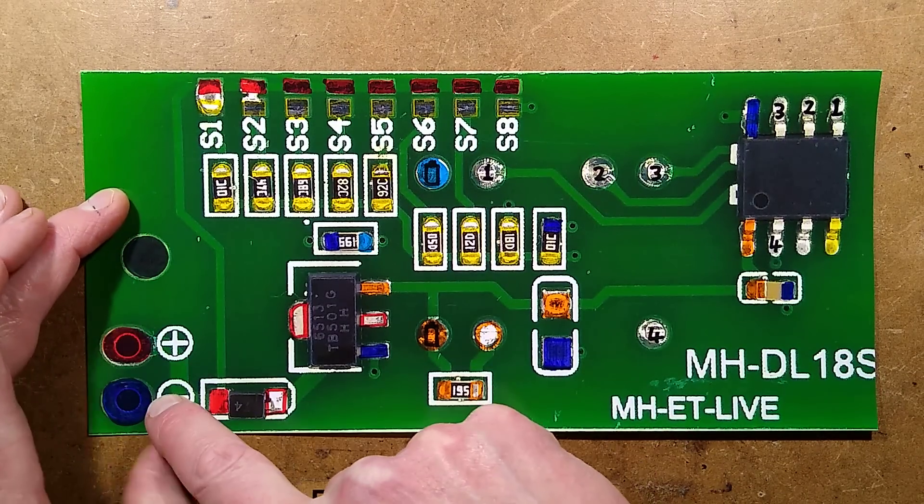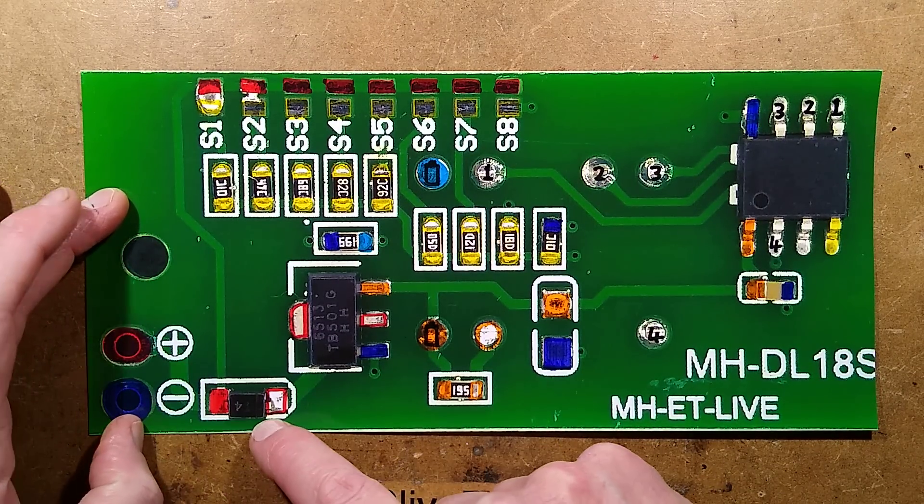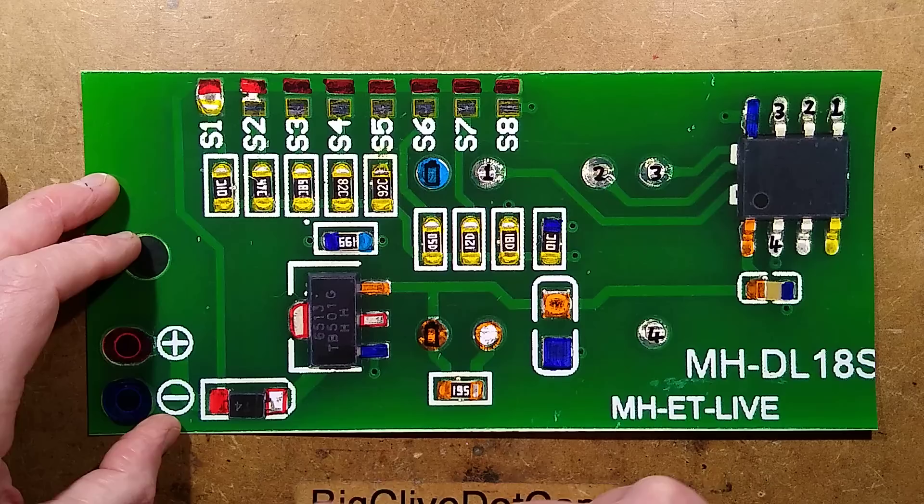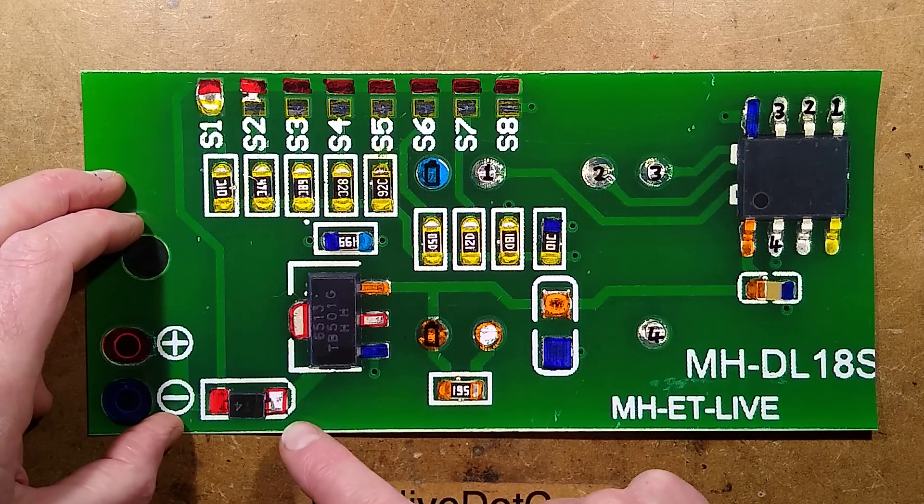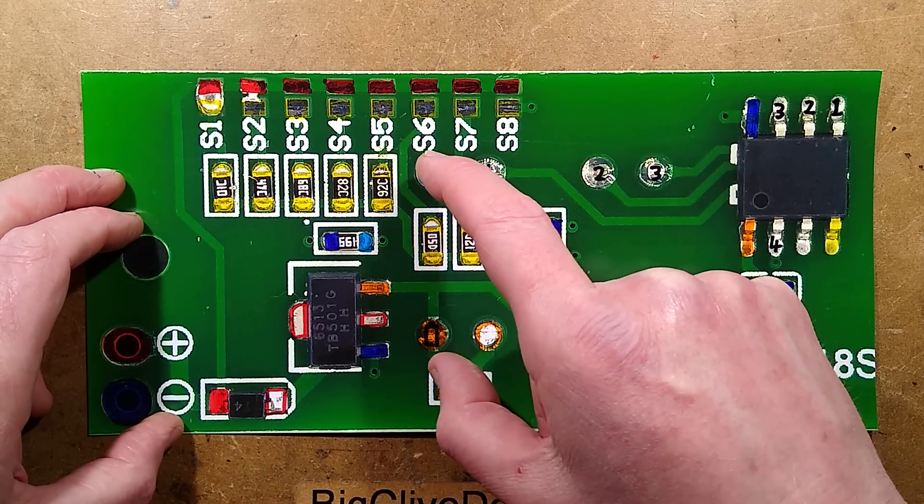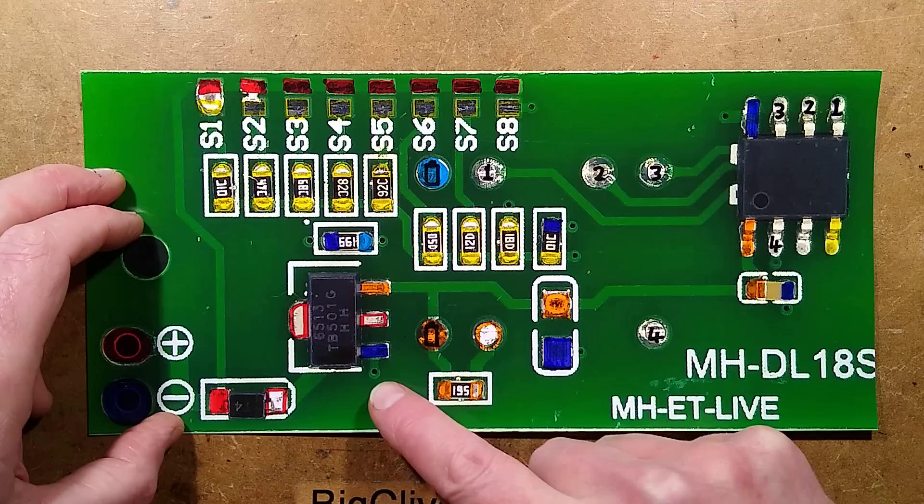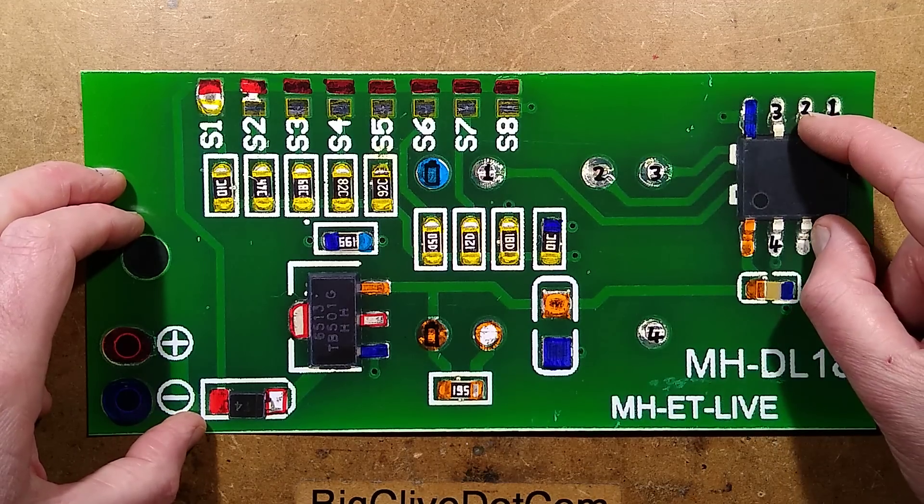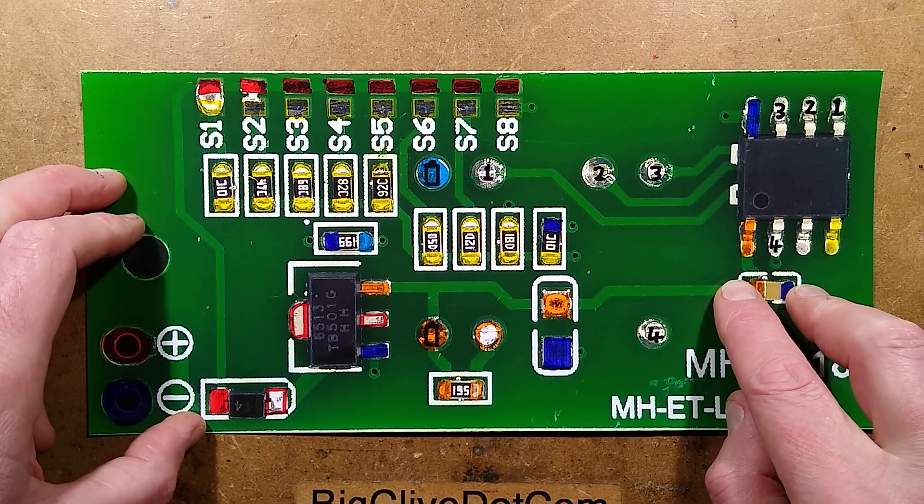So we've got the incoming supply and it goes via a polarity protection diode, a standard diode, to a 3 volt voltage regulator. The 3 volt voltage regulator basically then powers the LED outline and also has a common resistor for the bar LEDs and it powers a microcontroller with a little decoupling capacitor next to it.